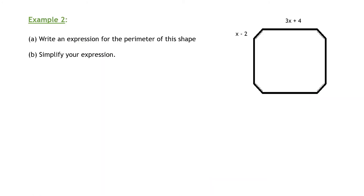Example 2 — this is our last example. Write an expression for the perimeter of this shape, and then we will simplify the expression. Perimeter is adding up all the lengths of all of the sides. I'm going to add the hash lines on right now — putting one on each of these beveled corners to show they're all the same length: x plus 2 for the corners, and 3x plus 4 for the straight sides.